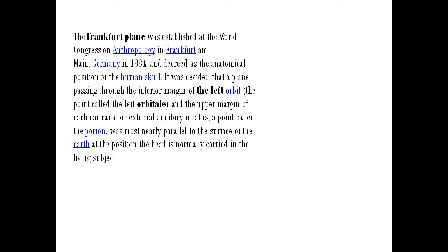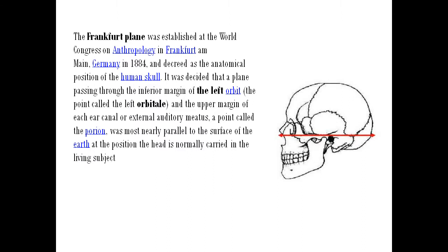The Frankfurt Plane was established at the World Congress on Anthropology in Frankfurt, Germany in 1884 and decreed as the anatomical position of the human skull. It was decided that a plane passing through the inferior margin of the left orbit, the point called the left orbitale, and the upper margin of the external ear canal, a point called the porion, was most nearly parallel to the surface of the Earth at the position the head is normally carried in the living subject.